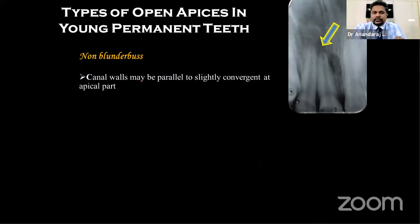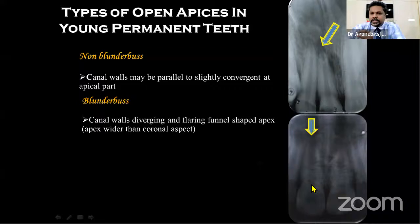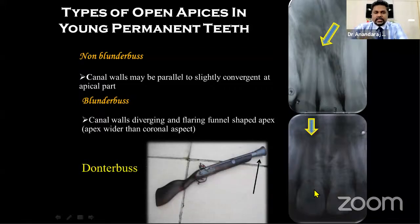There are different types of apices in young permanent teeth. In a non-blunderbuss canal, both sides are tapering but the apex is not completely closed. In a blunderbuss canal, the apex is wide open or funnel-shaped — wider at the apical part than at the orifice. The name 'blunderbuss' comes from a touch weapon called the 'donterbuss,' whose end was wide open in a funnel shape. Management differs between blunderbuss and non-blunderbuss canals.